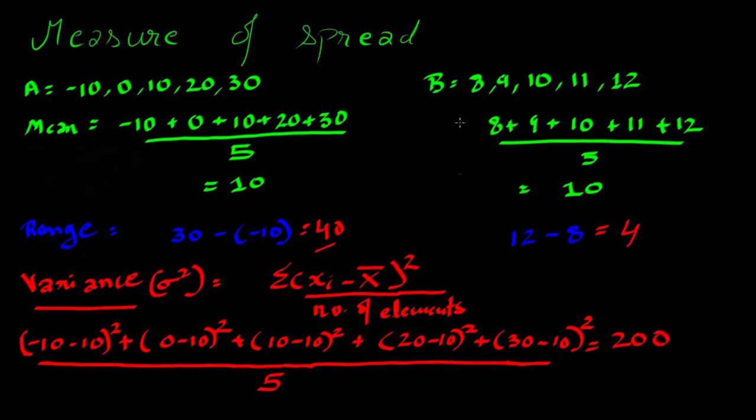Similarly, if I calculate the variance for set B, σ²(B) comes out to be 4.